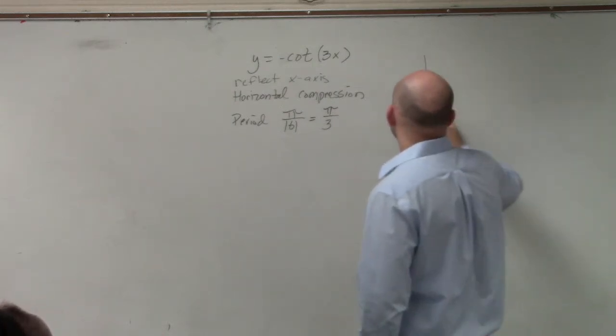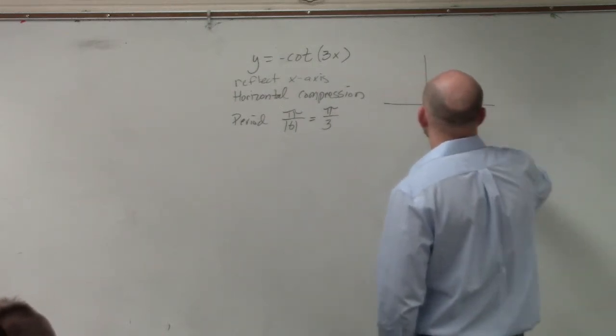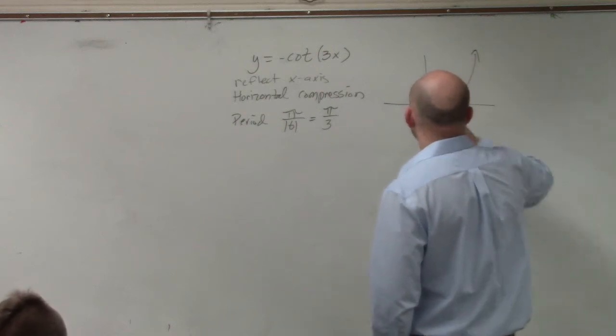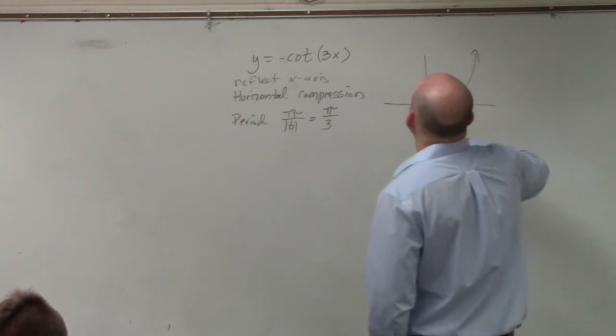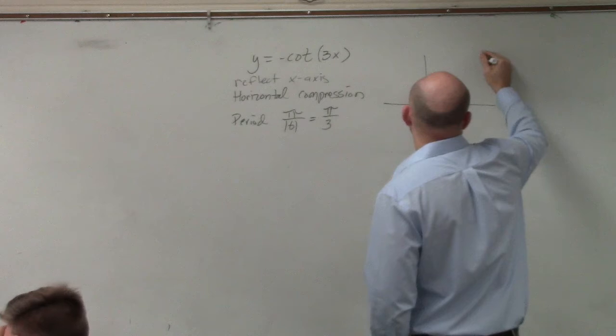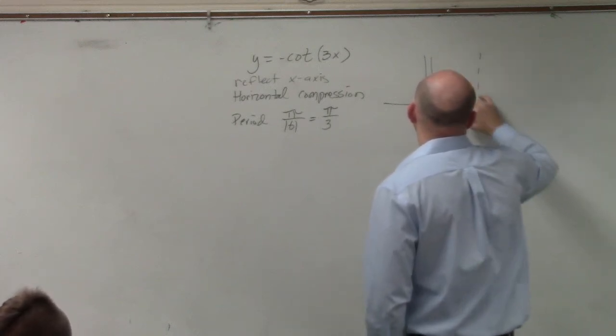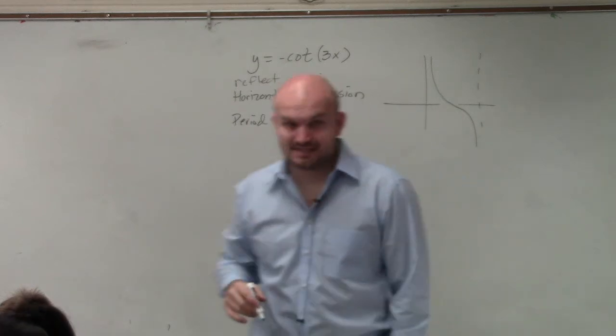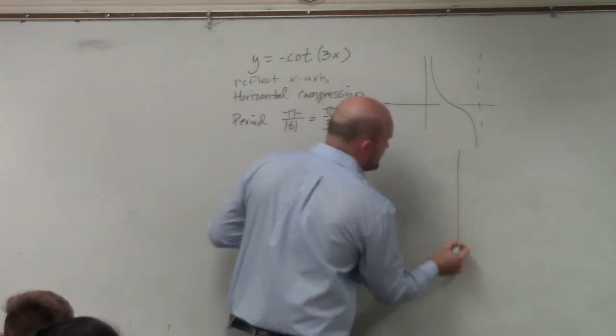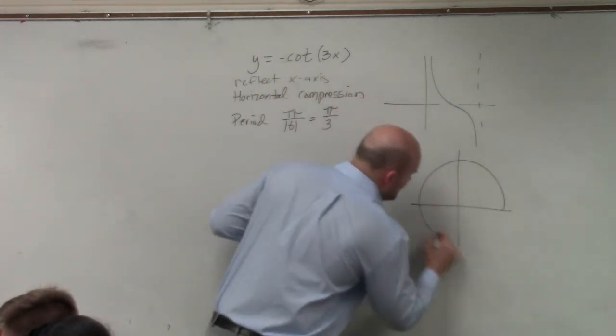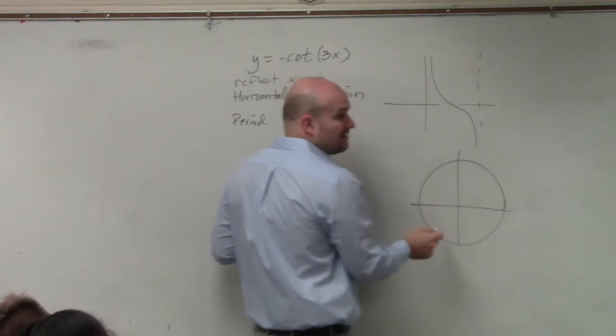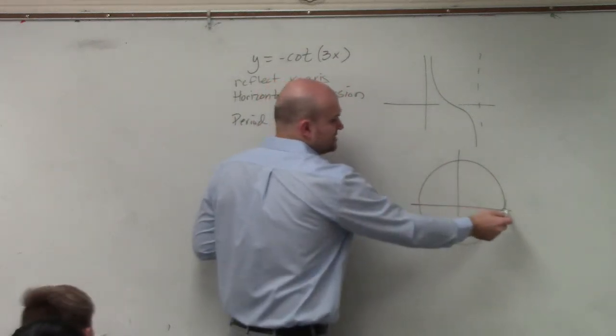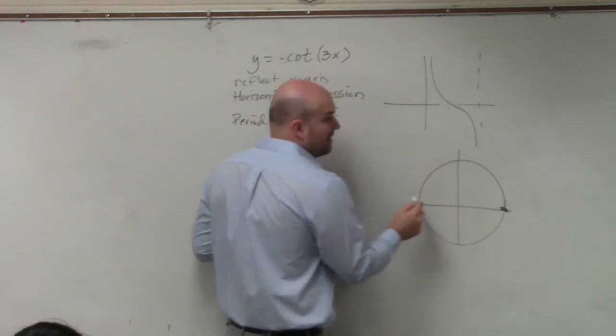If you remember, the regular cotangent graph looks something like that. Where the asymptotes, if you guys remember, we did this little unit circle thing. This graph was actually undefined for cotangent at 0 and at π.